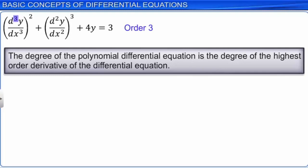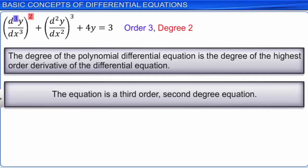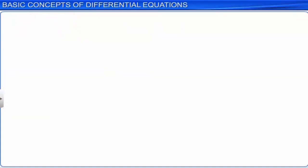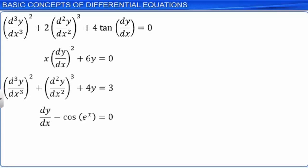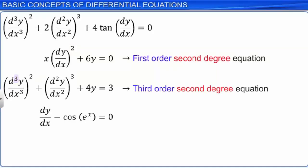Note that the degree of the second order derivative is 3, but we consider the degree of the highest order only. Consider another differential equation that is not a polynomial differential equation; hence its degree cannot be determined. The order of the first equation is 1 and its degree is 2. The order of the second equation is 3 and its degree is 2. The order of the third equation is 1 and its degree is also 1. The order and degree of a differential equation are always positive integers.